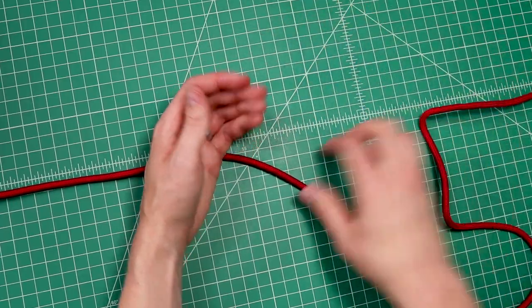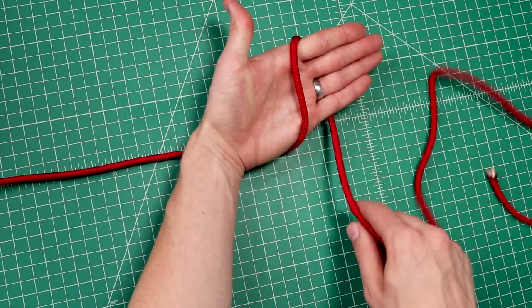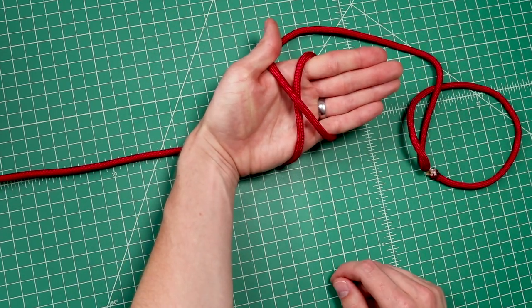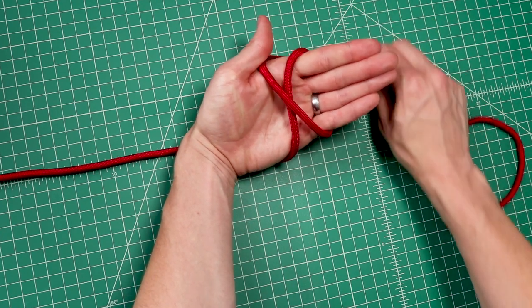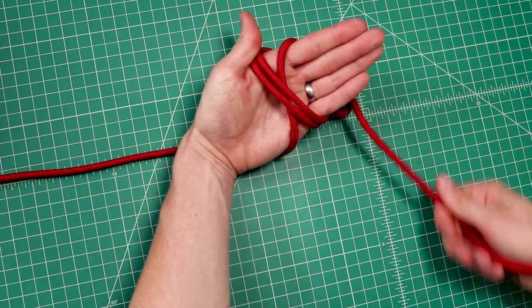Take your working end and wrap it around your hand once, and then twice in an X pattern, crossing over that first one, and then around again on that second line.